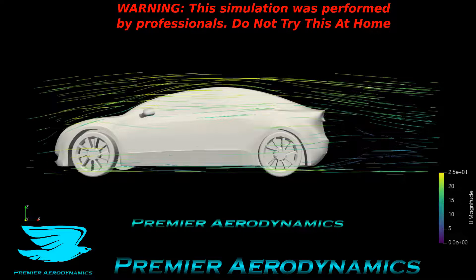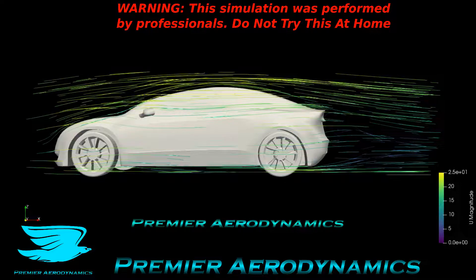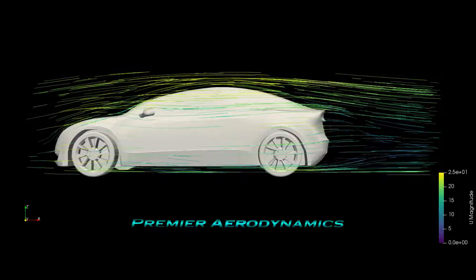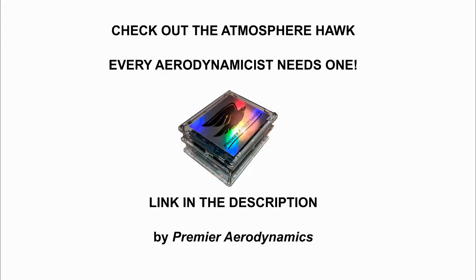Like, subscribe, and share this with your friends. Do you want a super easy way to make your experiments more accurate? Just measure the temperature, barometric pressure, and humidity of the air you are using. Most aerodynamicists assume the air is 1.2 or 1.225 kilograms per cubic meter, but it's not — every day is different. It can easily be two or three percent different. Get Atmosphere Hawk: it accurately measures temperature, barometric pressure, and humidity, and gives you a very accurate density. Link in the description. Peace out amigos.